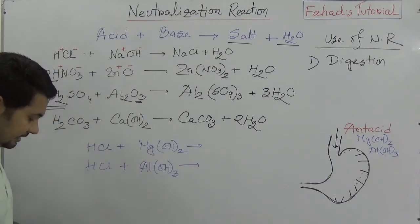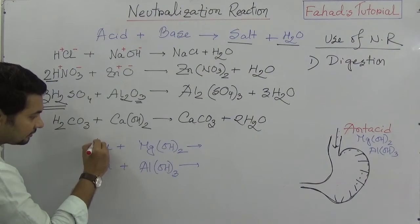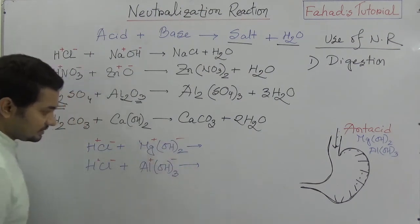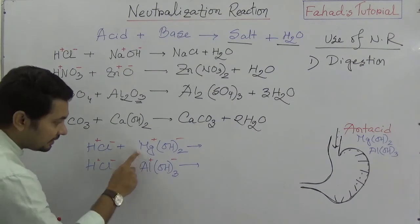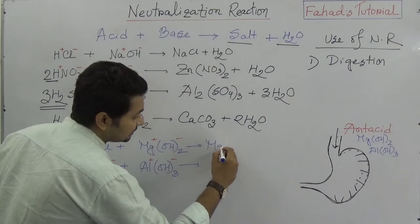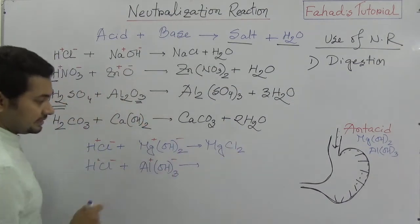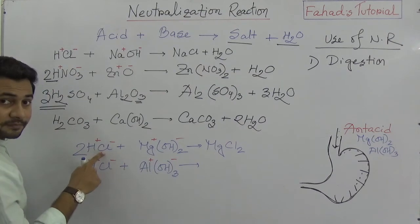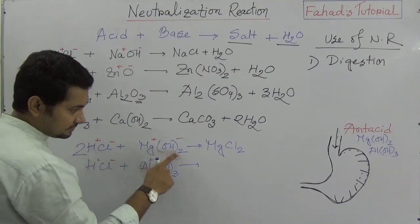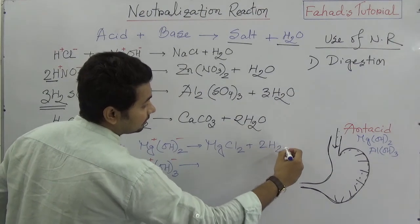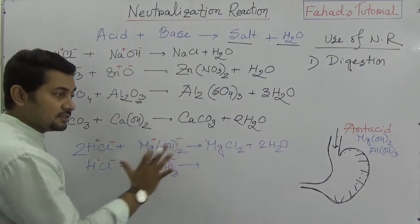Hydrogen will be positive and chlorine negative. Magnesium positive, hydroxide negative. In this case, magnesium will add with chlorine that will produce magnesium chloride, MgCl2. So this is 2, so it must be 2 here. And 2 hydrogen will produce 2 molecules of water. This is also neutralization reaction.